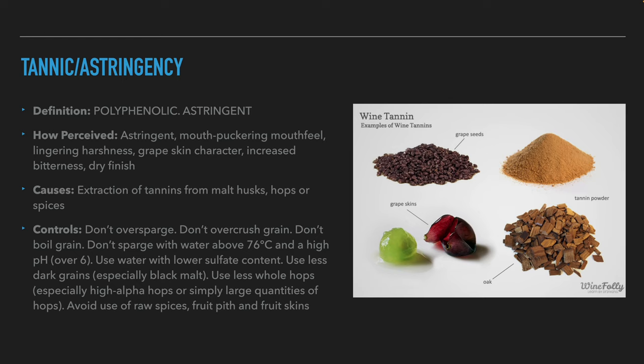To avoid tannin extraction, the brewers shouldn't over crush the grains, avoid boiling the grains, make sure that sparge water temperature is below 76 degrees centigrade and that the pH is lower than 6.0, and don't over sparge. In addition, the brewers can use water with less sulfate, lower dark grains usage and use less whole hops. If spices or fruits with tannins are used, the brewers should pay attention to avoid raw spices, fruit pits and fruit skins which contain high levels of tannins.